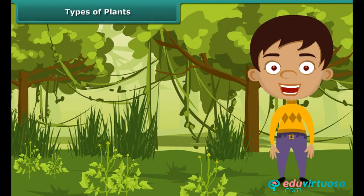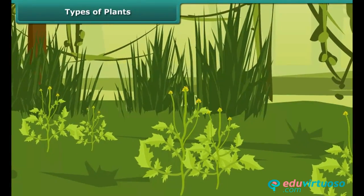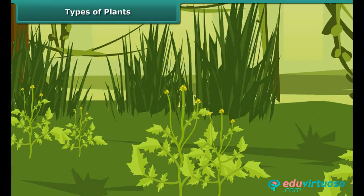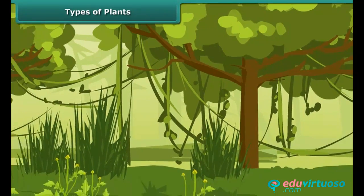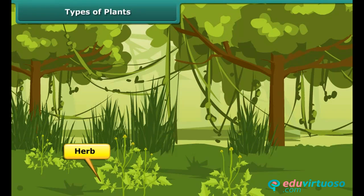We see different kinds of plants growing around us. They vary in their appearance — some are short while some others are tall, some are tender whereas some others are hard. Plants can be classified into three categories: herbs, shrubs, or trees, based on their characteristics.